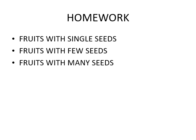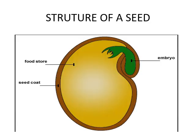Here is how you have to do the homework. You have to write in this format: first, fruits with single seed; second, fruits with few seeds; third, fruits with many seeds — and write two fruit names for each. Next, you can make a diagram of a seed. This structure is given on your screen — you can copy this and make it in your notebook and practice it. So now we will meet in the next lecture. Hope you will do your homework and I will discuss the homework solution in my next video.